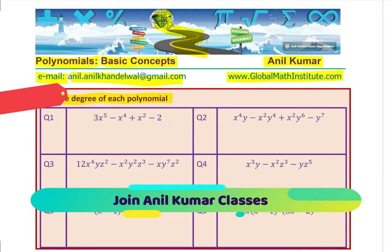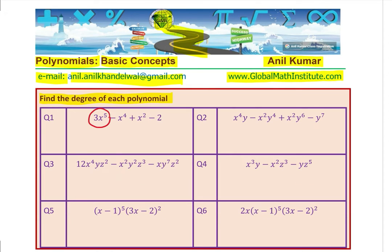The very first one, I hope you must have got the answer for that now. 3x to the power 5 minus x to the power 4 plus x square minus 2. There are 4 terms in this polynomial and here you notice that this term has the highest degree which is 5 and therefore degree of this polynomial is 5.